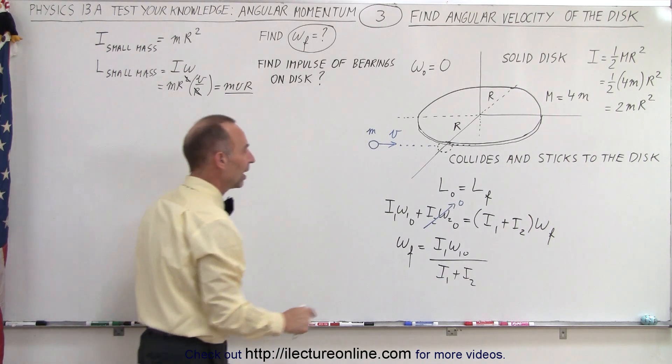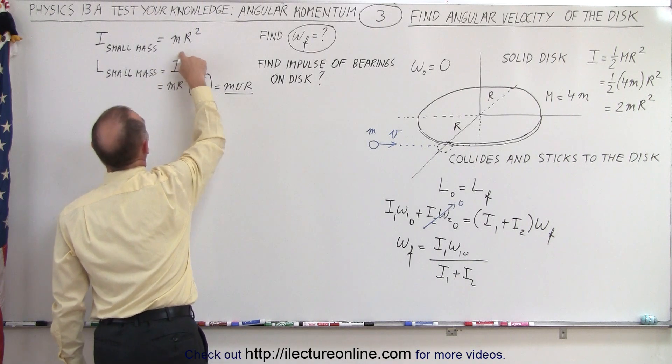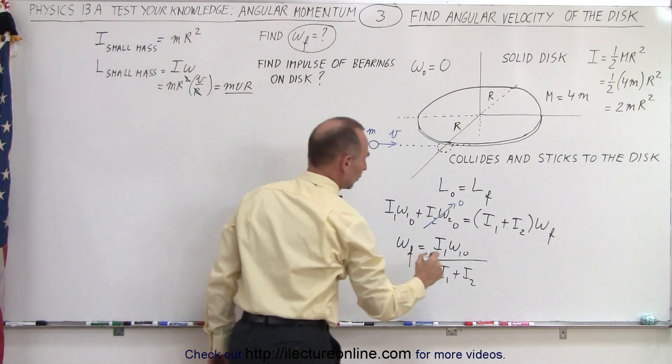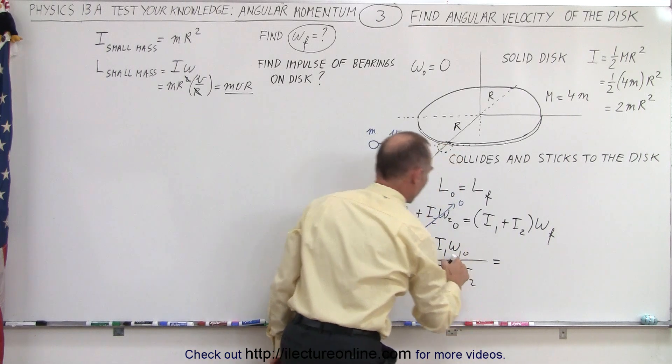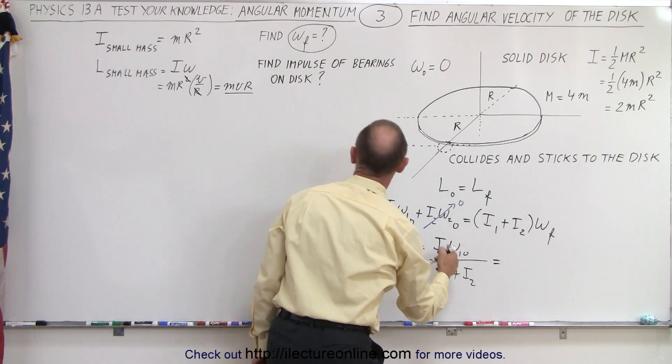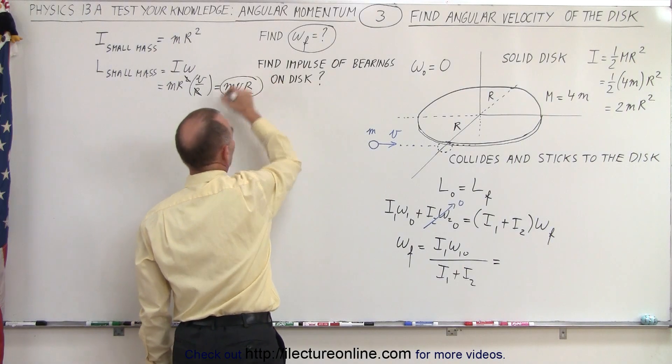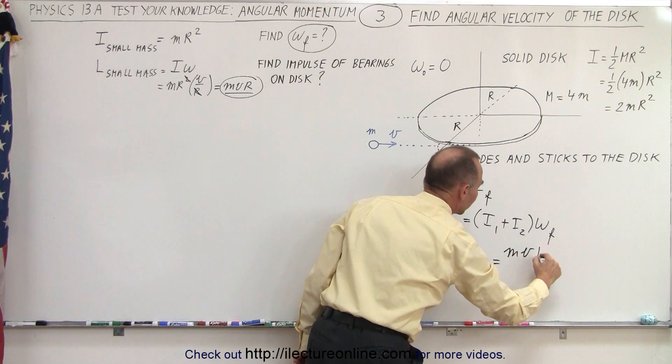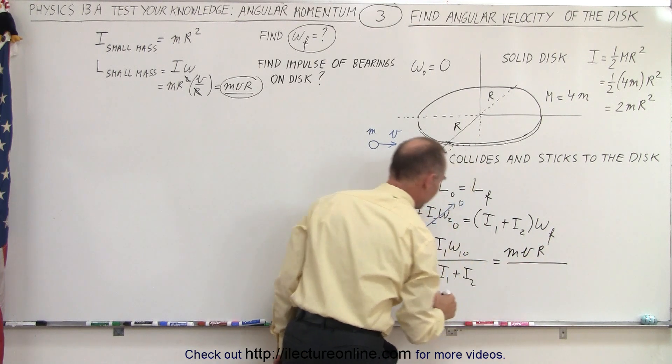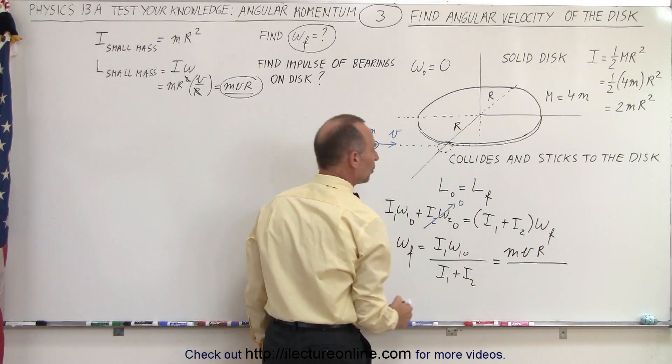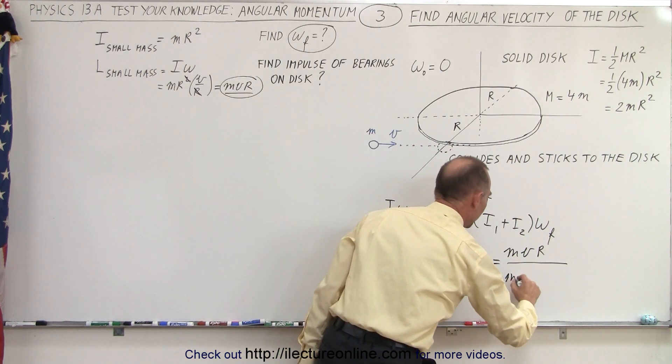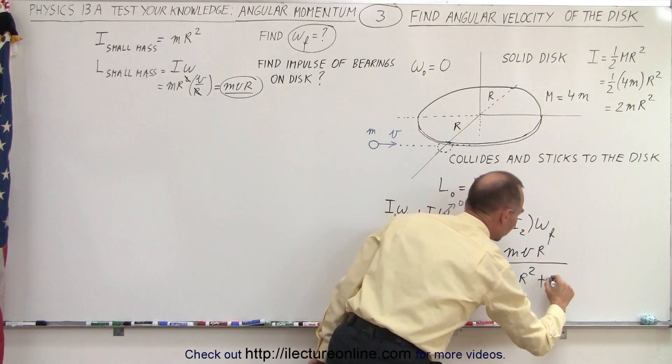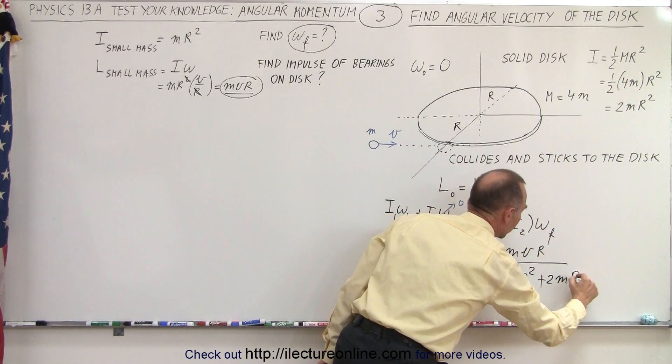So in this case, I₁ can now be expressed in terms of mr². So this equals mr² times ω₁_initial, which would simply be mvr. So we can go ahead and write this as mass times velocity times the radius of the disc divided by the sum of the two moment of inertia, that would be mr² plus 2mr² for the moment of inertia of the disc.